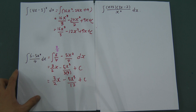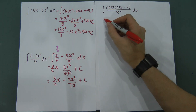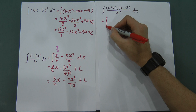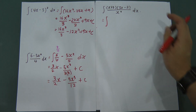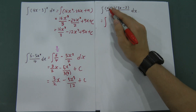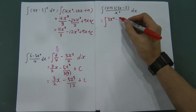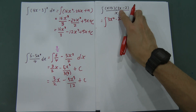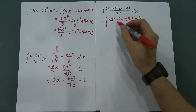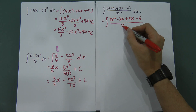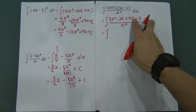For the third example, when you see this kind of expression, you should split it up. But first you need to expand the numerator. So expand: x multiplied by 3x gives 3x², x multiplied by negative 2 gives negative 2x, 3 multiplied by 3x gives 9x, and 3 multiplied by negative 2 gives negative 6. This all divided by x⁴. Simplifying the numerator gives 3x² plus 7x minus 6.